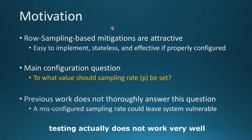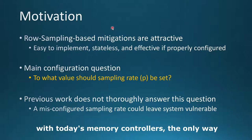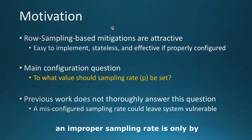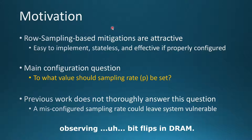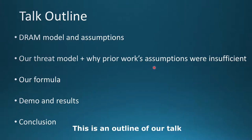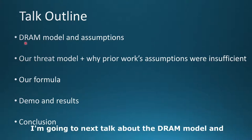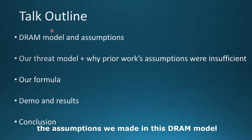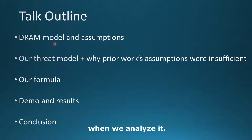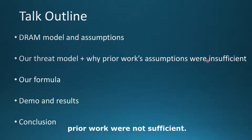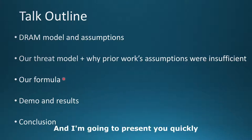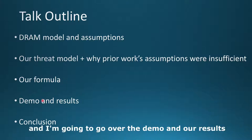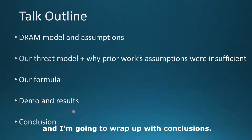Testing actually doesn't work very well. With today's memory controllers, the only way we can think of catching an improper sampling rate is by observing bit flips in DRAM. So this is an outline of our talk. I'm going to next talk about the DRAM model and the assumptions we made, followed by our threat model and why some assumptions made by prior work were insufficient. Then I'll present the formula, go over the demo and results, and wrap up with conclusions.